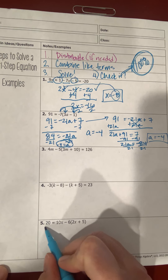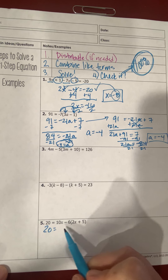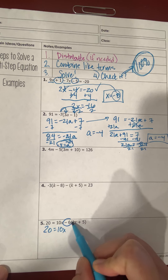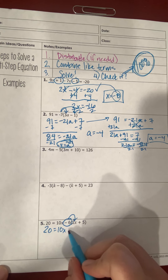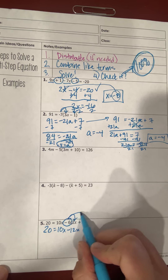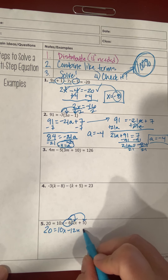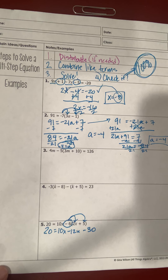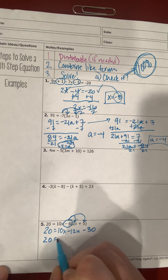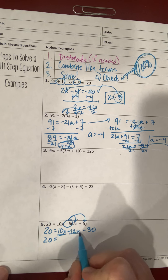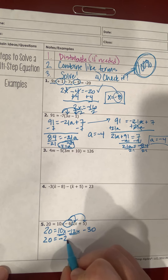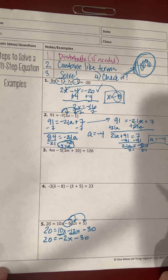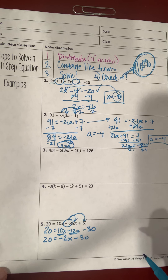Let's jump to example 5. I keep 20 by itself and distribute only the negative 6: I get negative 12x, and negative 6 times positive 5 is negative 30. Now I combine like terms: 20 stays, and 10x plus negative 12x is negative 2x minus 30.